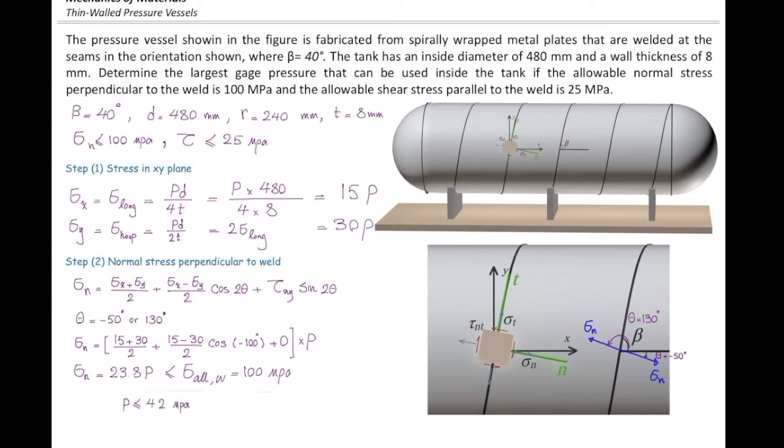And from that, I can determine how much is the maximum allowable pressure. In this case, that would be 4.2 megapascals. It equals 4200 kilopascals.